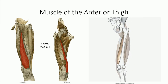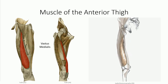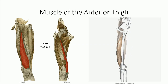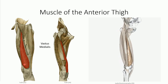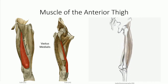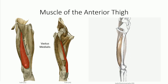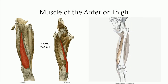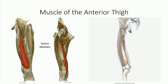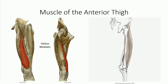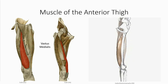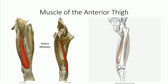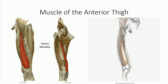The vastus medialis has a long, narrow origin off the medial portion of the linea aspera. Its insertion is distinct, as a massive portion of the terminal fibers insert obliquely on the medial side of the patella. As a result, these fibers are often called the vastus medialis obliquus, or VMO for short. They play an important role in maintaining proper alignment of the patella and counter the pull of the iliotibial band, which attaches laterally. Note that while the VMO is given this special distinction, it is not a separate muscle but a sub-region of the vastus medialis.